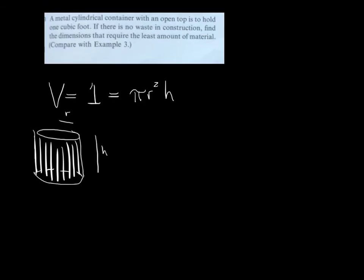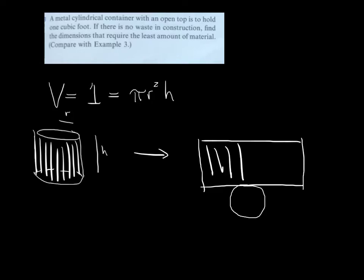If there's an open top, the surface area consists of the rectangular portion that wraps around the cylinder together with the circular portion that makes up the bottom. These vertical lines would show up on the rectangular portion.